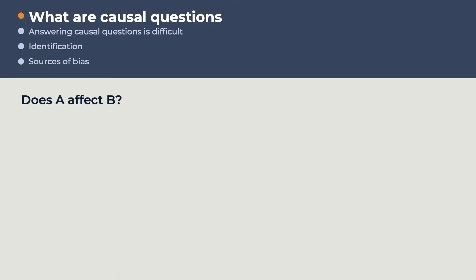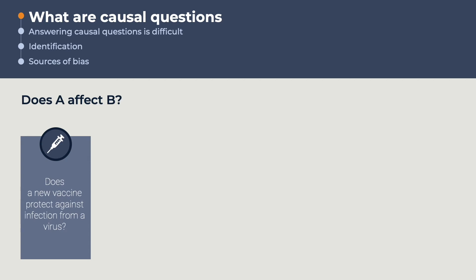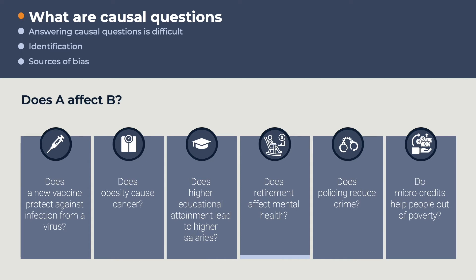Causal questions are fundamental to all walks of life. These are questions that try to uniquely ascertain the effects that an action, policy, or innovation has on something else. Causal questions are particularly common in medical and biological sciences, for example, whether a new vaccine protects against infection from a virus, or whether obesity causes cancer. However, they are equally important in other areas such as education, social science, criminology, and development of poorer nations.